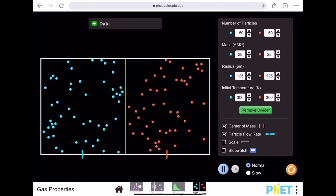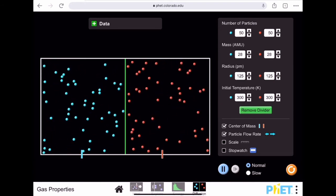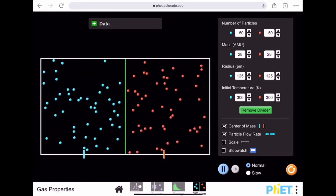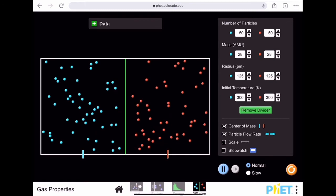I'm going to reset it. Pick one of the red molecules and track it with your eyes and see how long it takes to get to the other side. Will it make a straight line?